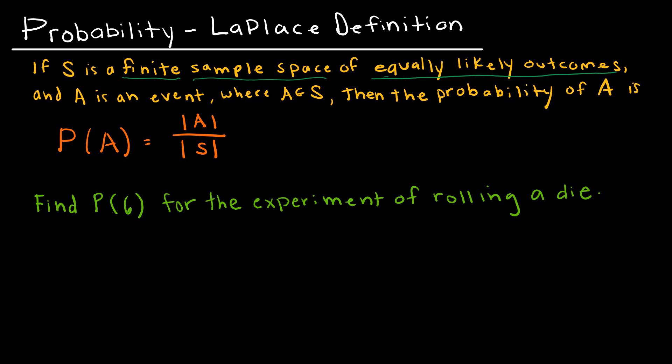For instance, when I roll a die, the possible outcomes are 1, 2, 3, 4, 5, 6. That would be S, the sample space.